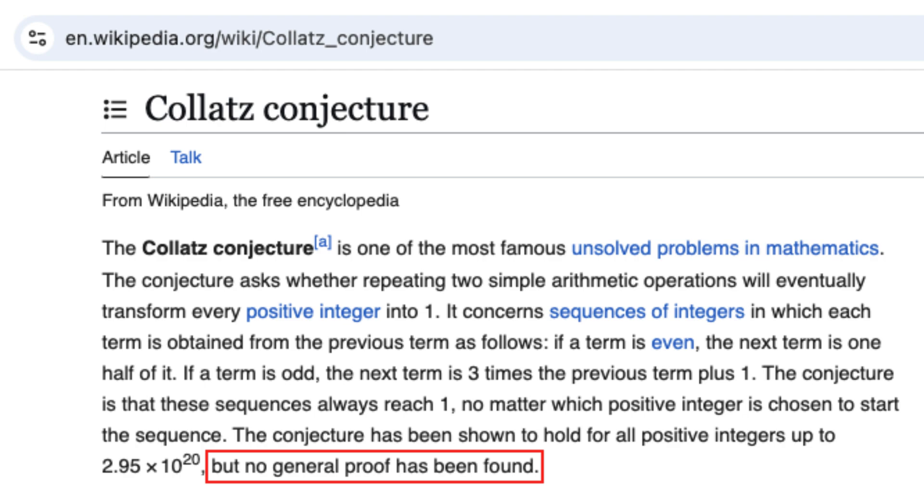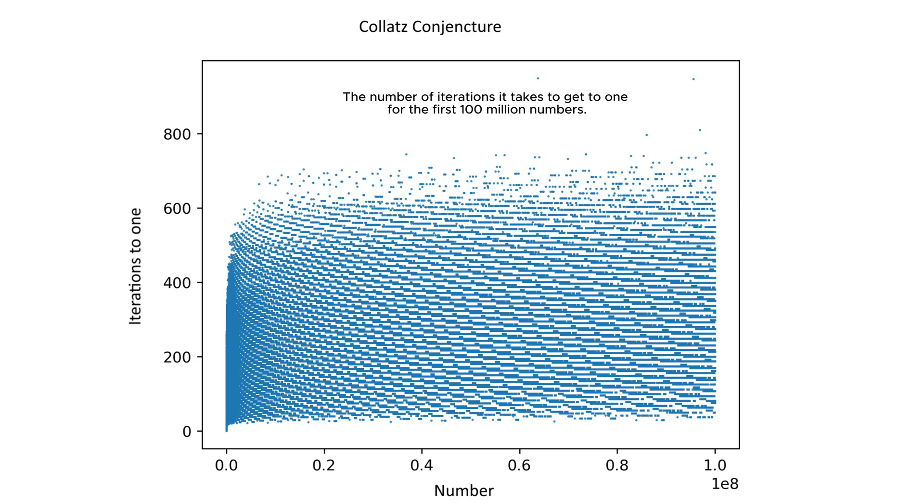This creates an extraordinary challenge. We need to prove something works for literally every positive integer, even as the sequences they generate swing chaotically between small and enormous numbers.